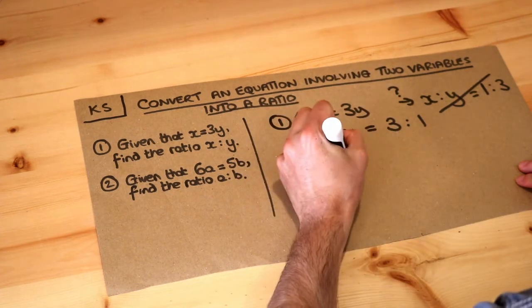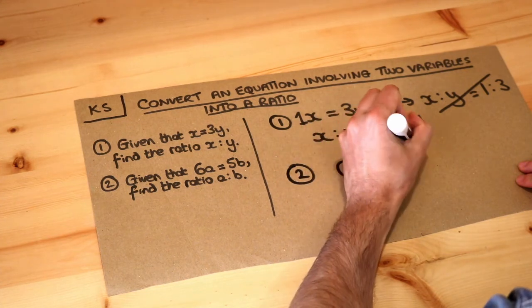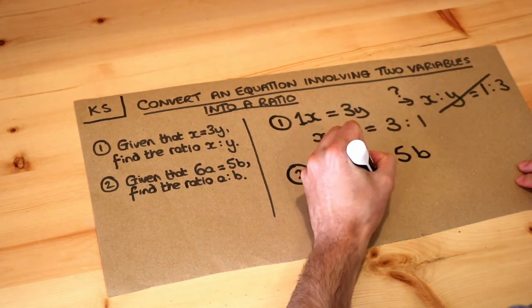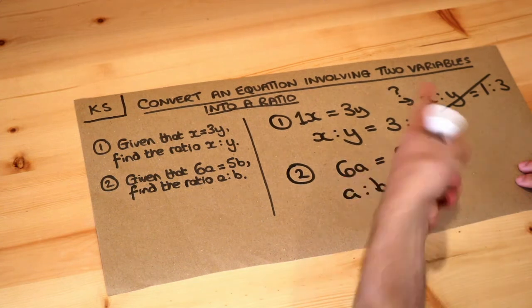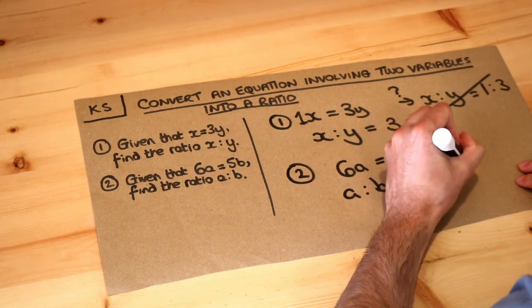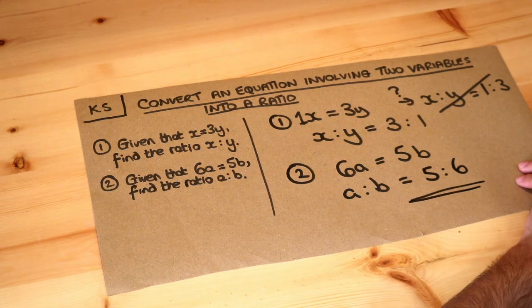So if we do that with the second one, so 6a is equal to 5b, then the ratio of a to b is, well if we swap the numbers that's the kind of trick here, you just get 5 to 6 and that's the final answer.